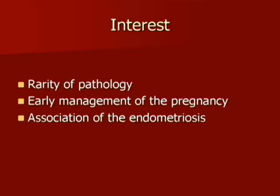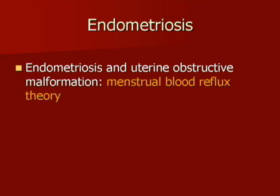This case report is peculiar not only because of the rarity of the pathology, but also due to onset circumstances and early management of the pregnancy, avoiding any hemorrhagic incident. To our knowledge, in the literature there are few cases of pregnant rudimentary uterine horn where pregnancy had not led to symptomatic uterine rupture. Peritoneal endometriosis is often associated with obstructive malformations of the genital tract, and this finding is an argument in favor of the pathogenic menstrual blood reflux theory of endometriosis.